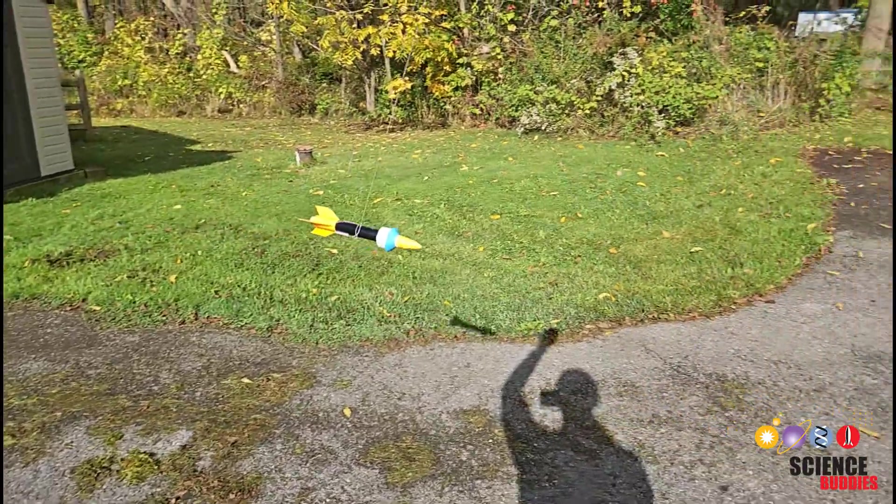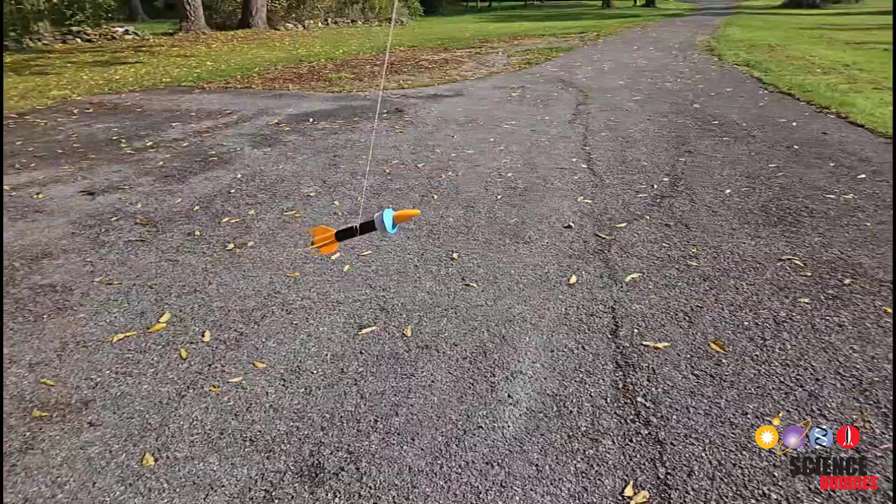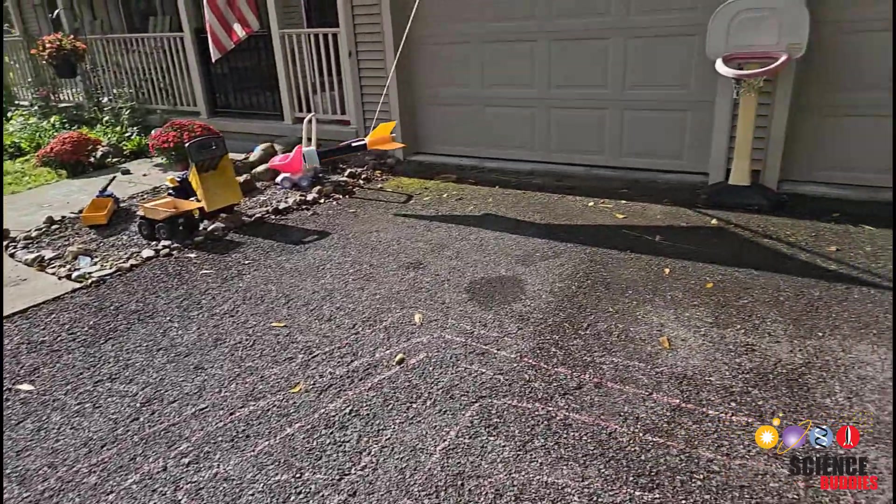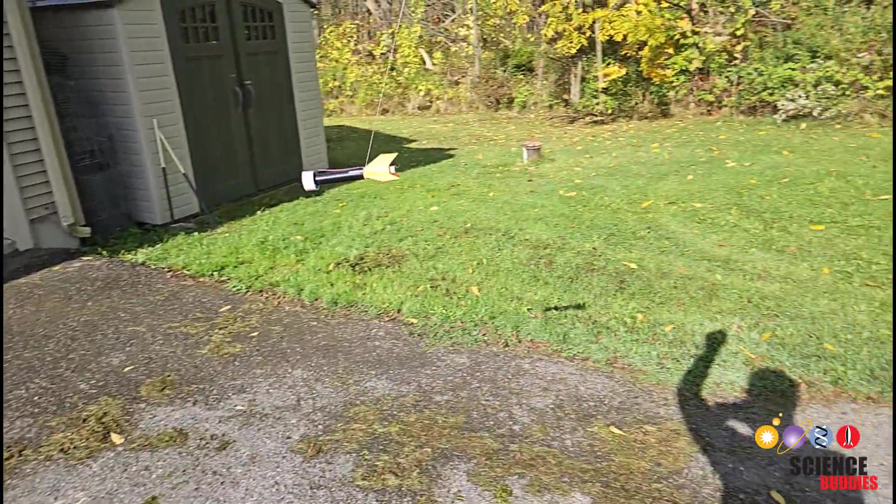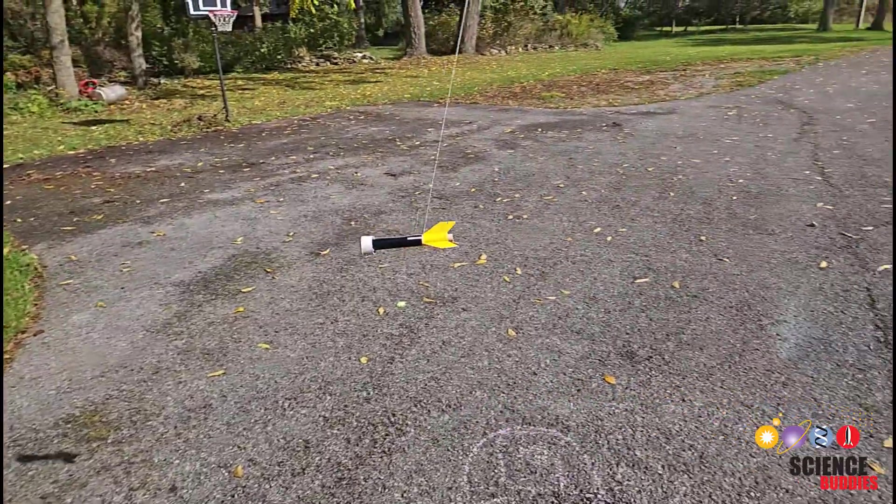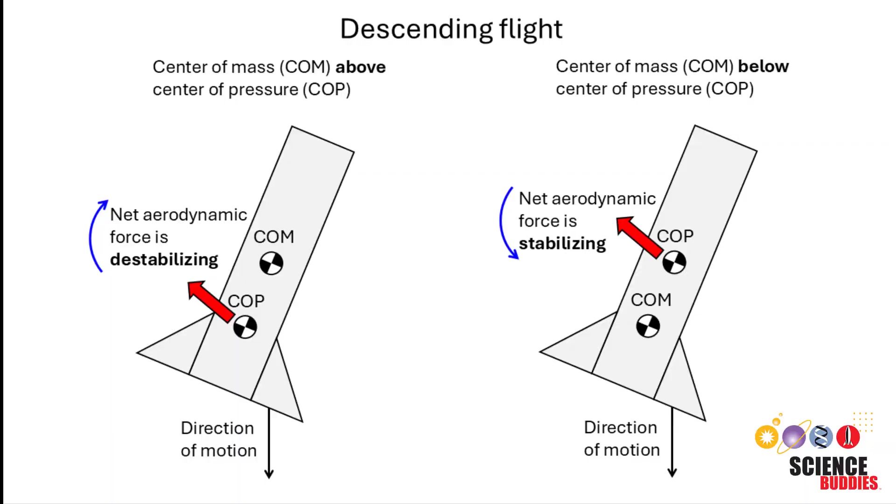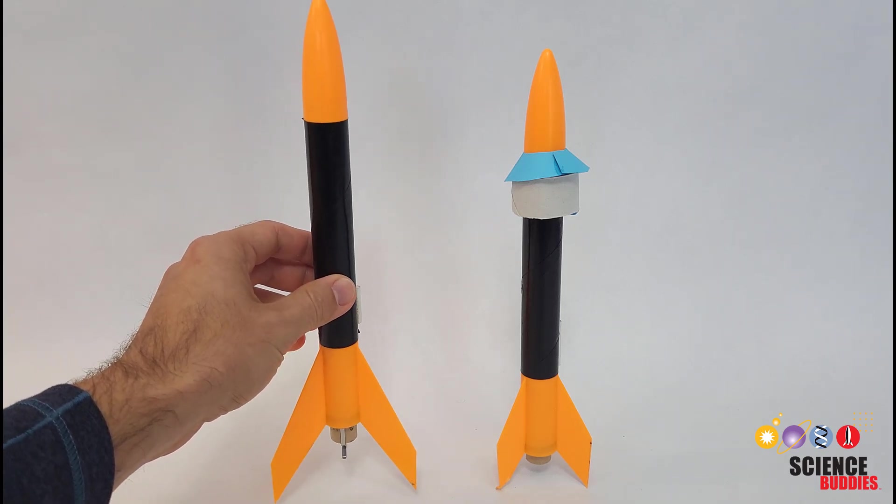Now, here's the big challenge for this project. Can you design a rocket that flies normally or nose first initially, but reverses direction and flies tail first after the engine burns out and the nose cone ejects? To do this, you'll need to reverse the rocket's aerodynamic stability. For it to come back down tail first, you'll want the center of pressure above the center of mass. There's no single right or wrong way to do this, but here are some ideas.